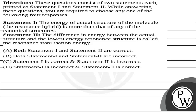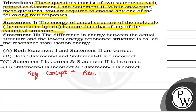Let's read this question. The question consists of two statements, each printed as Statement 1 and Statement 2. While answering, you are required to choose any one of the following four responses. The key concept of this question is the resonance hybrid structure and the meaning of canonical structure.